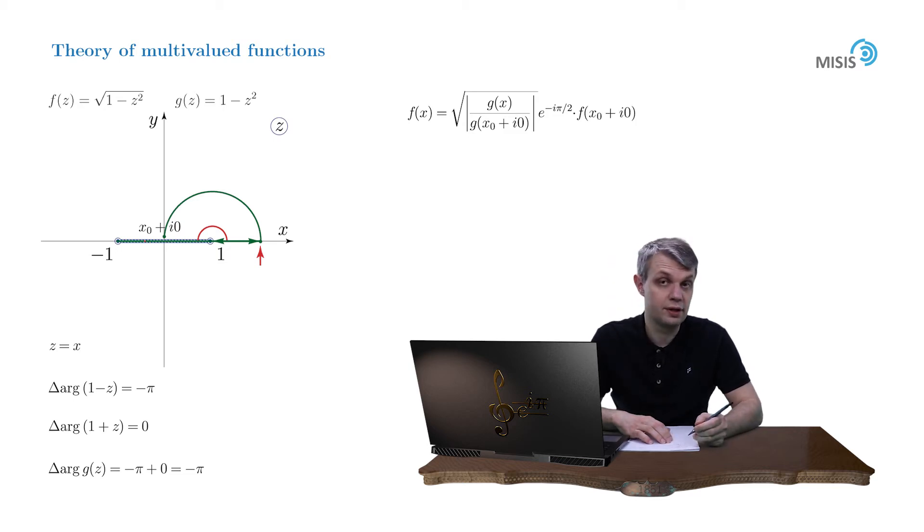Now let's have a closer look at our square root. We transform it as follows. The modulus of the ratio is turned into the ratio of moduli.